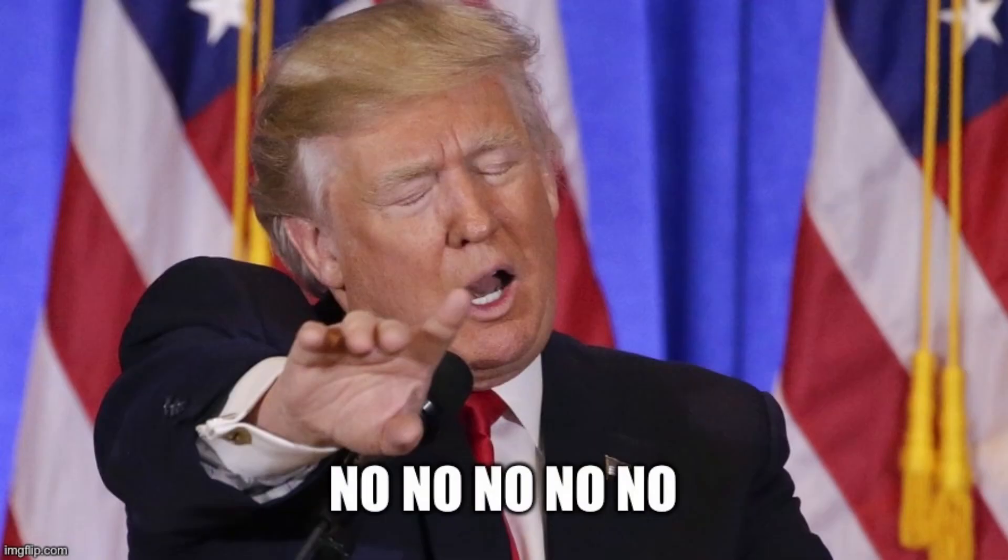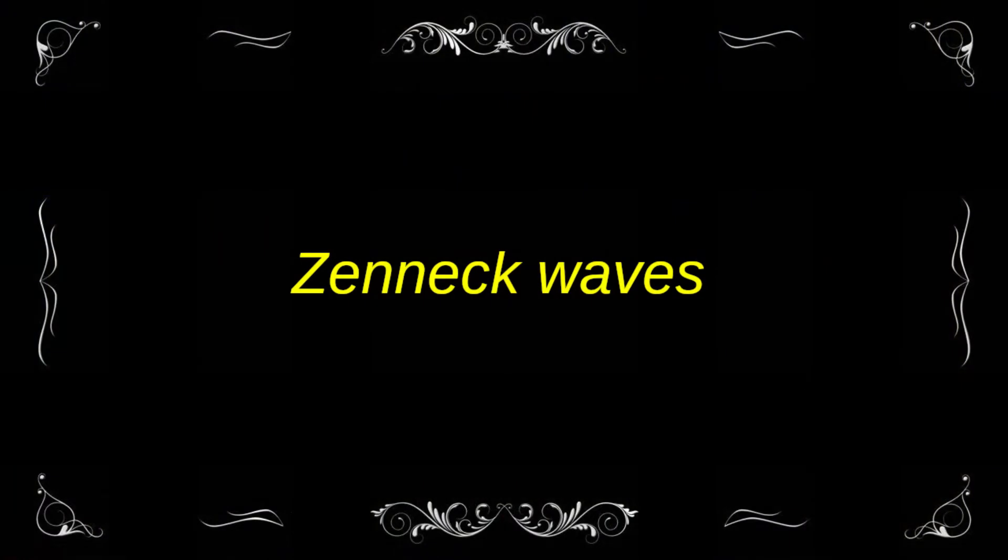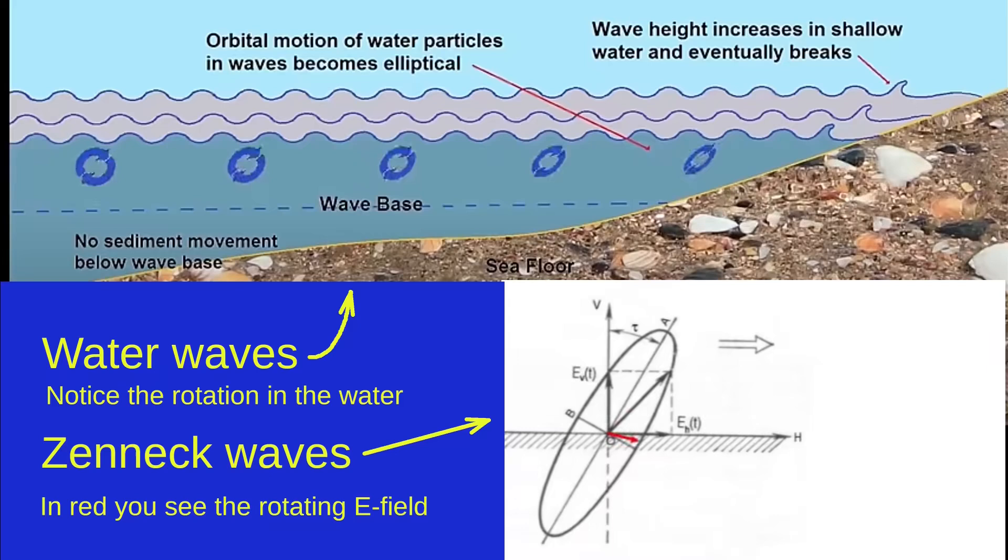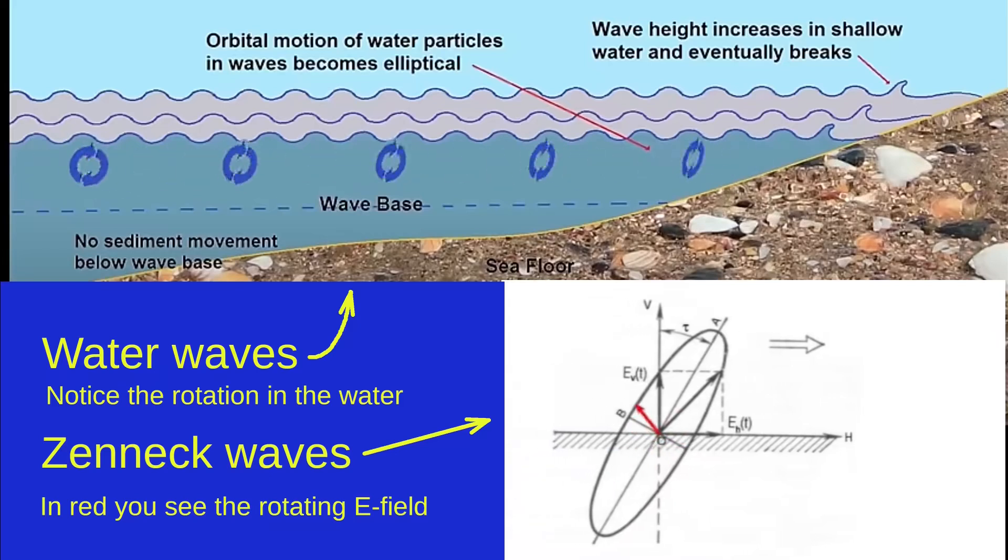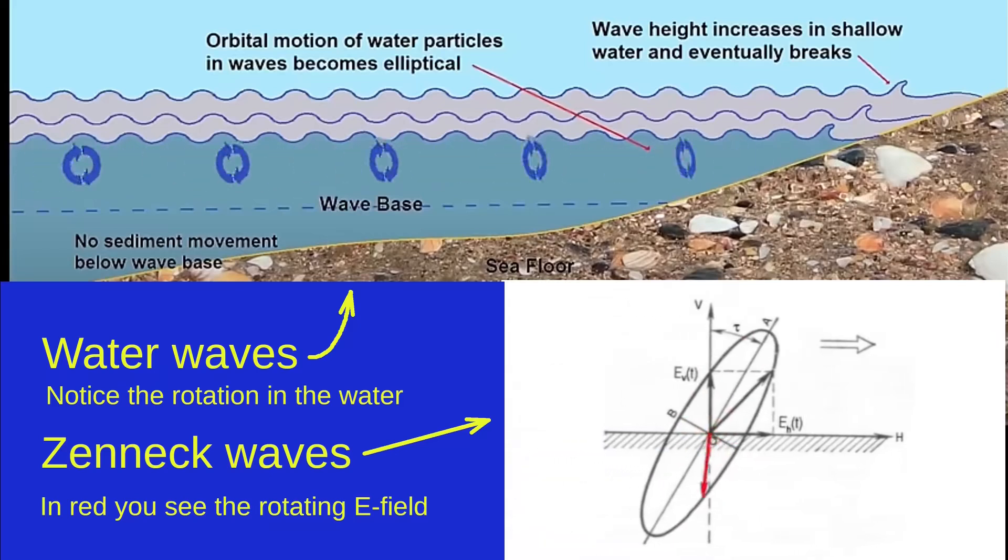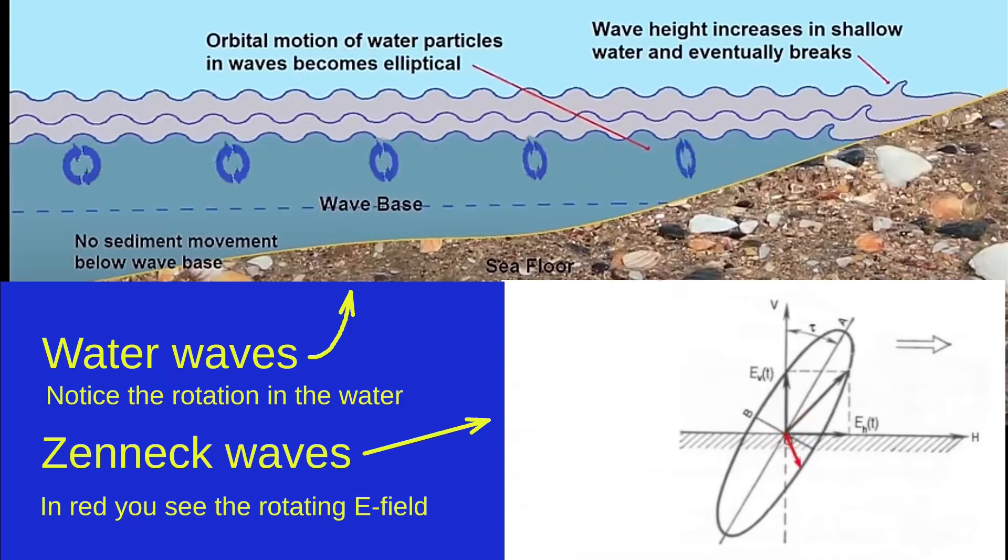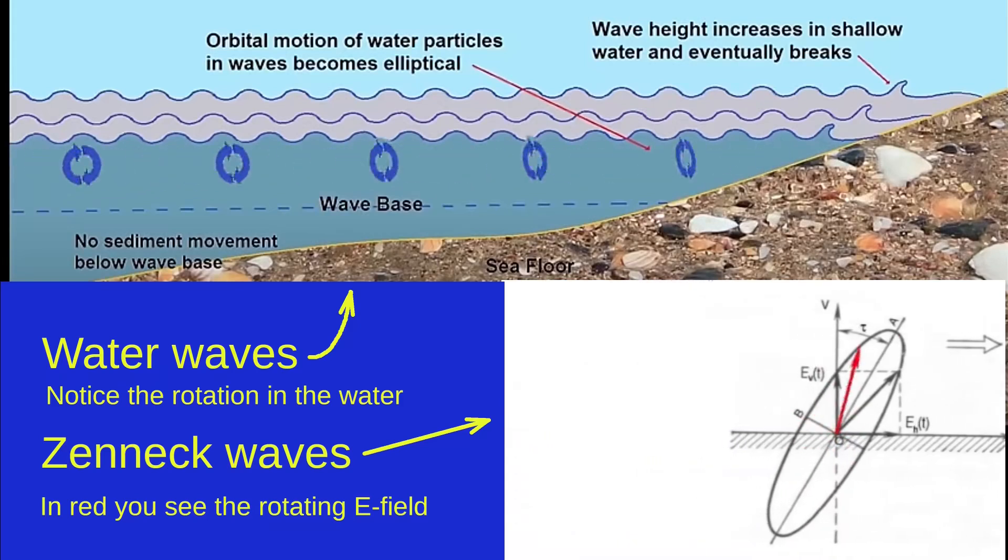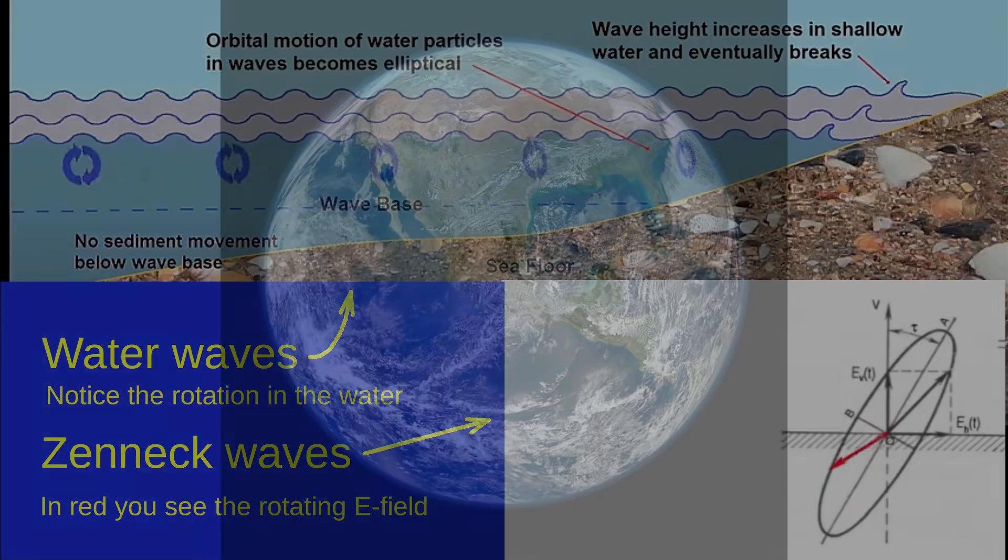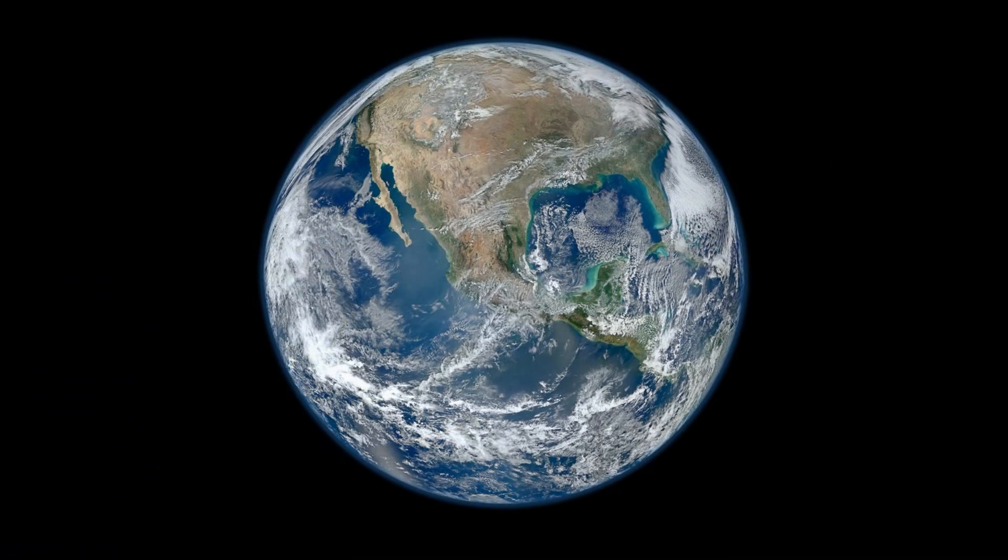It is argued by many that this system won't work because such waves are impossible. What are Zenneck waves? Zenneck waves are surface waves that travel along the interface of two media with different electrical properties, much like waves on water. Only these are electrical waves that travel over the surface of the Earth, following the Earth-air or water-air interface.